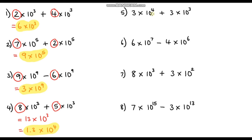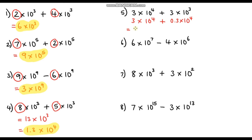Question 5: 3 times 10 to the power 4 plus 3 times 10 to the power 3. This time the powers of 10 are different. Write out the larger power first: 3 times 10 to the power 4. Rewrite the second number with power 10⁴ — since we multiplied the power of 10 by 10, we divide the base by 10: 3 ÷ 10 = 0.3. So it becomes 0.3 times 10 to the power 4. Now add the base numbers: 3 plus 0.3 is 3.3. Answer: 3.3 times 10 to the power 4.